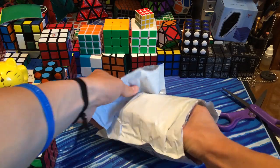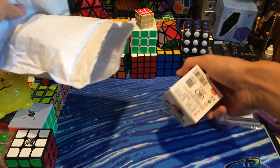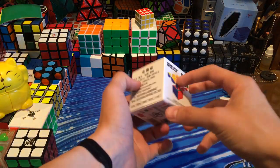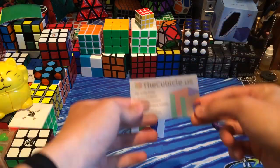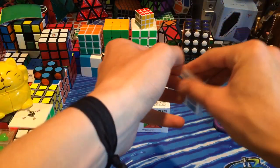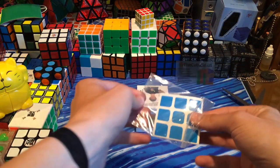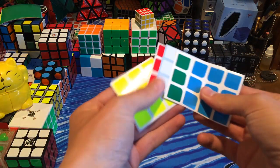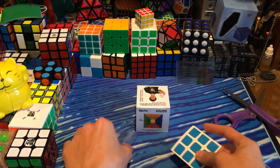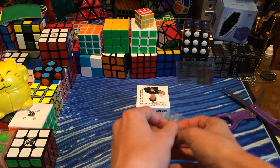But in here is, yes, the Moyu Aolong. This is the new Moyu 3x3, and the cubicle was nice enough to send it to me as a testing cube, and it also came with a free packet of stickers. I'm not quite sure if this is full bright or half bright or standard, because I don't really use the cubicle stickers, but thank you for that.